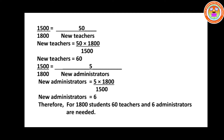For 1800 students we found 60 teachers. Now finding the new number of administrators: 1500 divided by 1800 equals 5 divided by new administrators. Cross multiply and simplify — cancel zeros, 5 into 3 gives 15; cancel 3 with 18 to get 6. New administrators equals 6. Therefore for 1800 students, 60 teachers and 6 administrators are needed.